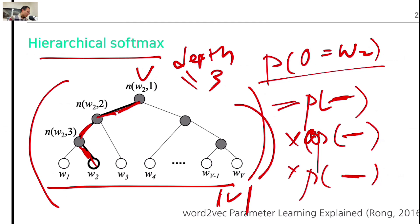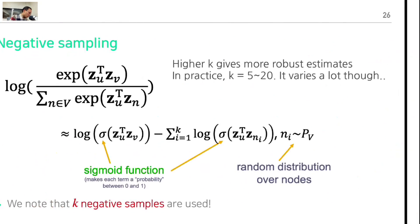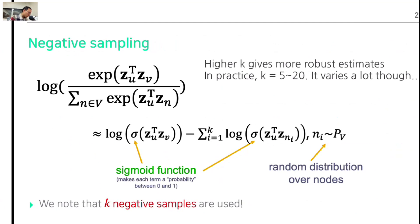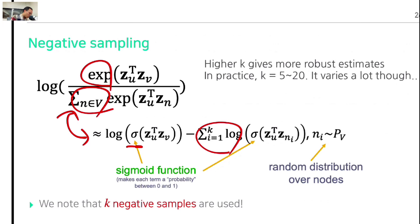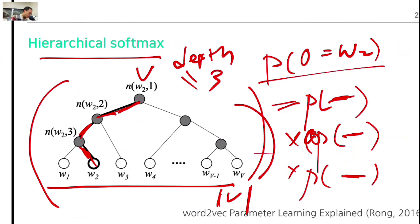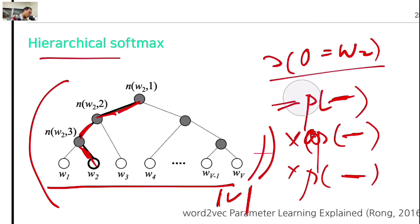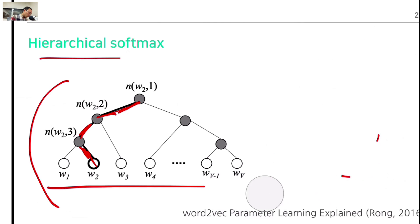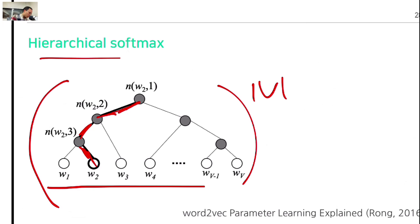Instead of the expensive skip-gram optimization, hierarchical softmax builds an alternative neural network and learns that instead. From a theoretical perspective, negative sampling replaces the exponential with a sigmoid and replaces the normalization with negative sampling. The architecture differs but minimizes space and time complexity significantly.